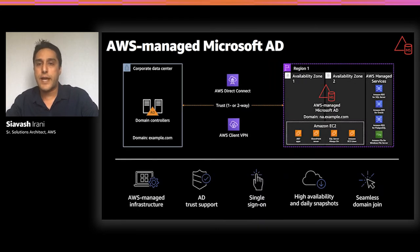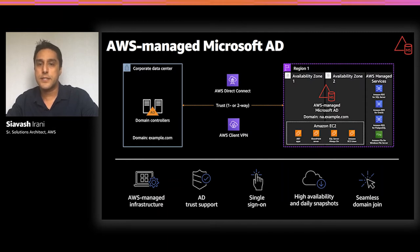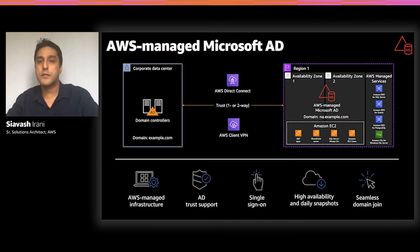When you launch AWS Managed Microsoft Active Directory, it creates a highly available pair of domain controllers connected to your VPC. Controllers run in different availability zones, and monitoring, recovery, data replication, snapshots, and software updates are automatically managed for you. You can run directory-aware workloads including Microsoft SharePoint and custom .NET and SQL Server-based applications. You can also configure a trust relationship with your on-premises Active Directory for single sign-on, and use seamless domain join to join EC2 instances to Active Directory.